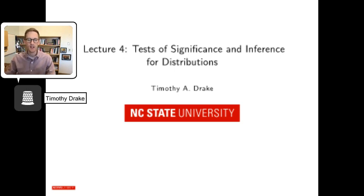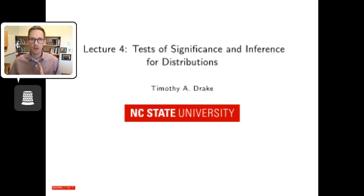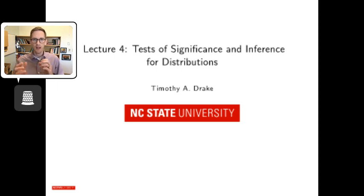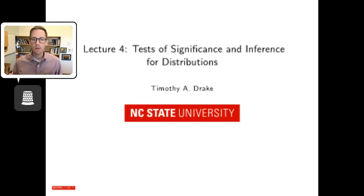Welcome to Lecture 4: Tests of Significance and Inference for Distributions. As Lecture 3 finished up, we were talking about the sampling distribution of sample means — how if our sample lives somewhere in that distribution, the true population parameter will lie within one, two, or three standard deviations of our sample mean with some degree of probability. Knowing this allows us to make inferences around a confidence interval.